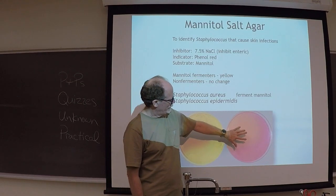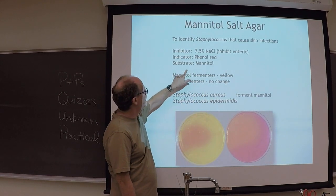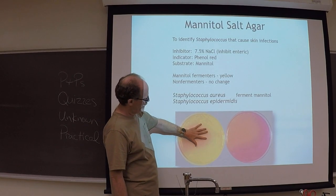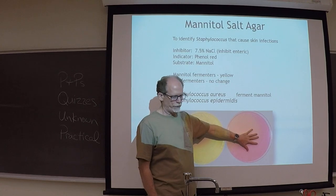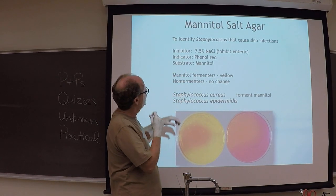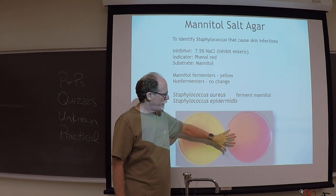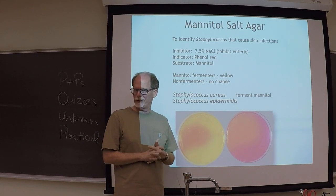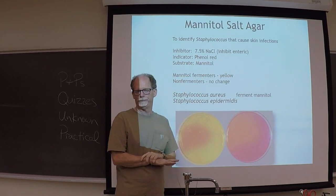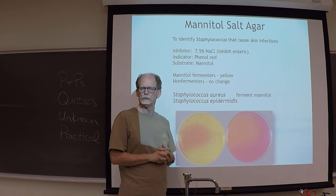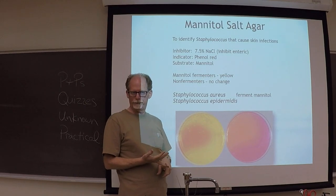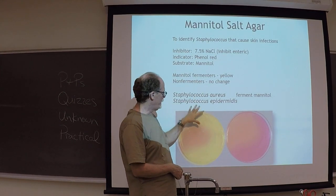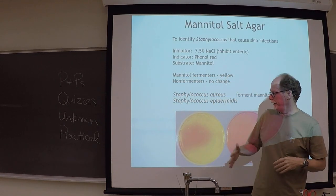When you start with this media, it's red in color because it contains phenol red — that's the indicator. It indicates the pH: yellow means the pH went down; if it stays red, the pH didn't change. The inhibitor is the high sodium chloride content — most other bacteria won't grow because they can't tolerate it. On the quiz or practical, you'll be asked: what's the inhibitor, what's the indicator, what's fermented, and what grows on it. Staph aureus will grow and generate a yellow color.